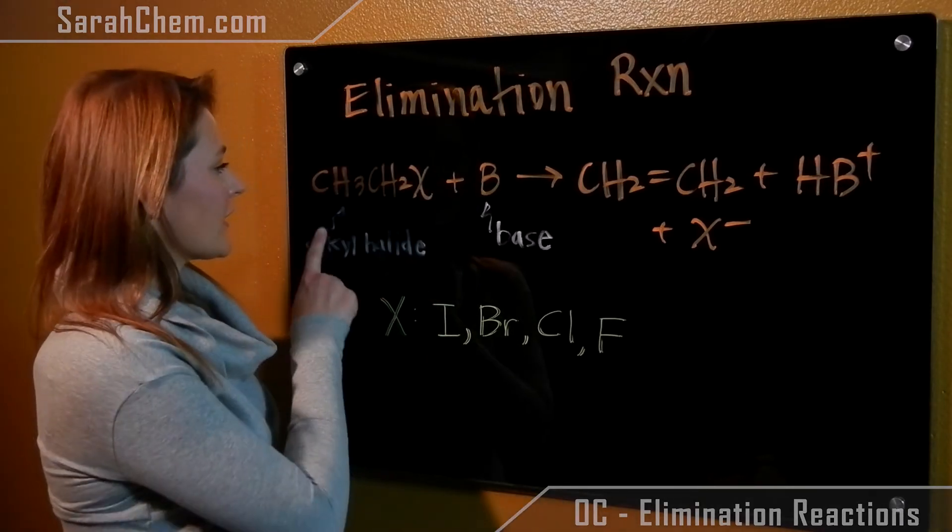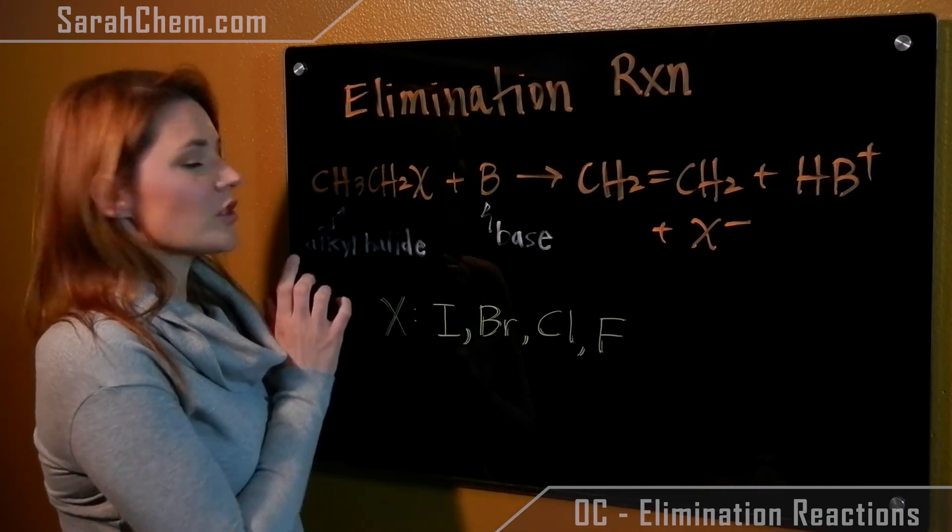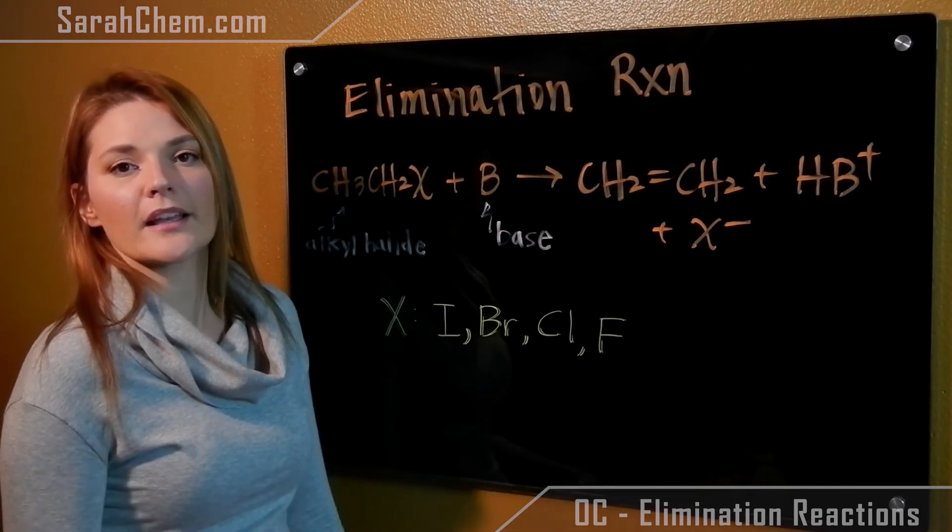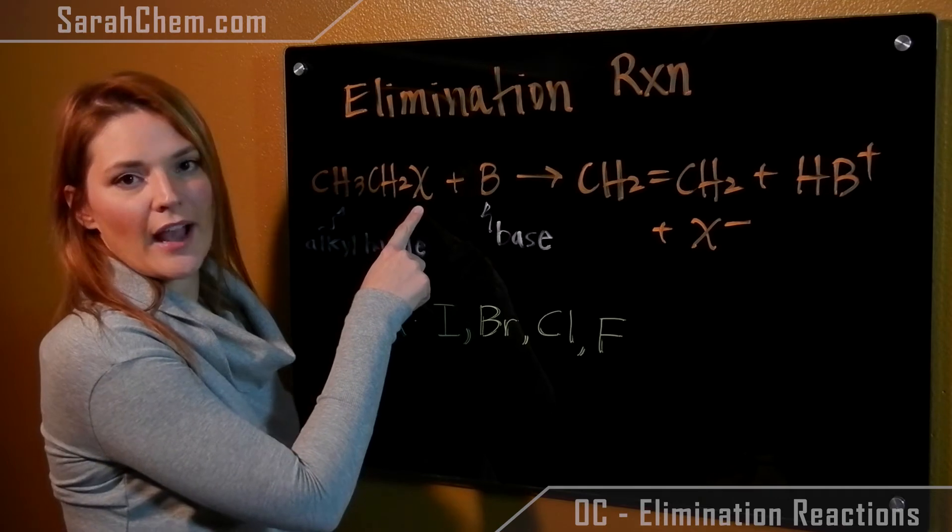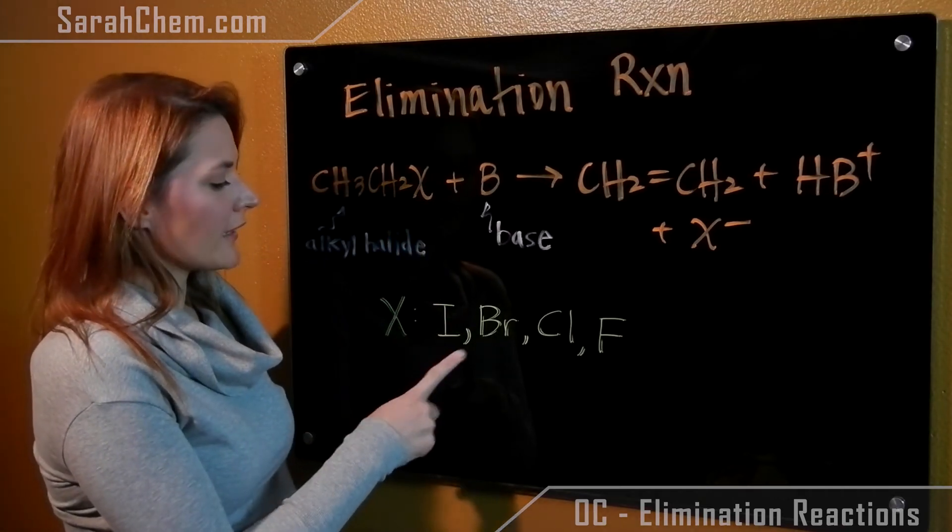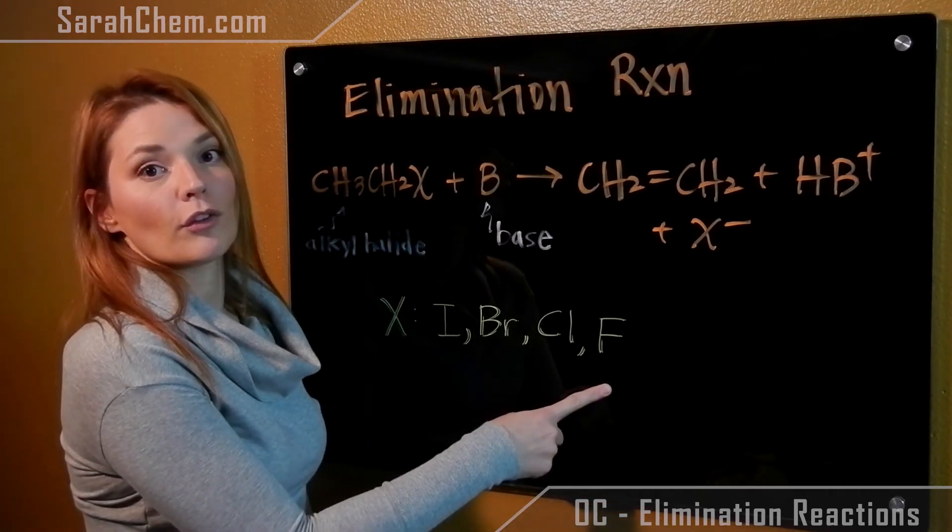So what you're going to have is an alkyl halide to start out with. So an alkyl halide is just some kind of alkyl chain attached to X, which is our halogen. So X represents iodine, bromine, chlorine, or fluorine.